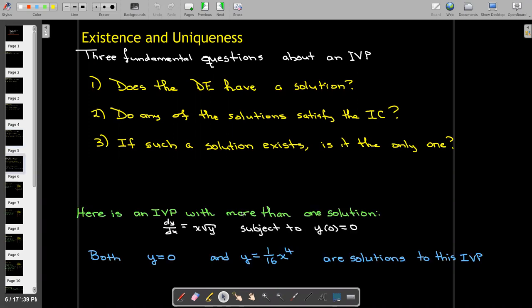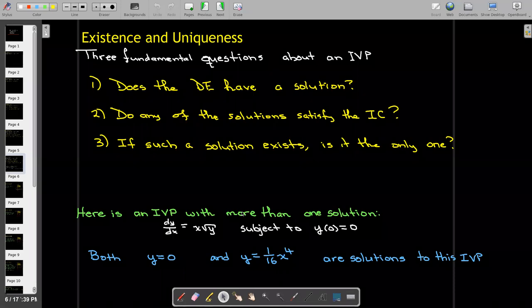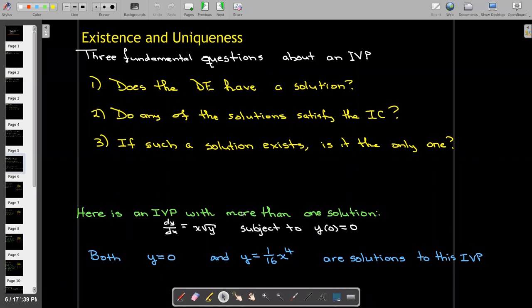That's a valid question. Here's a very simple IVP with more than one solution. We have dy/dx equals x times the square root of y, and we're going to have the initial condition that y(0) equals zero.